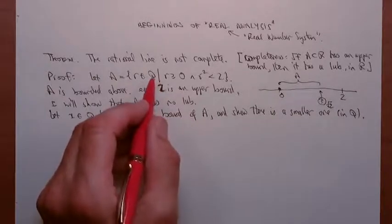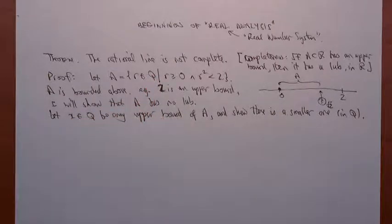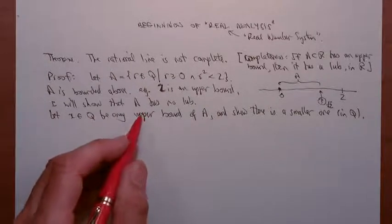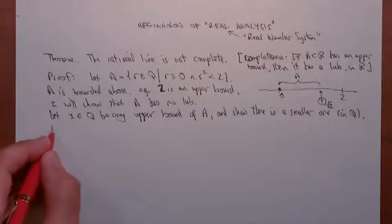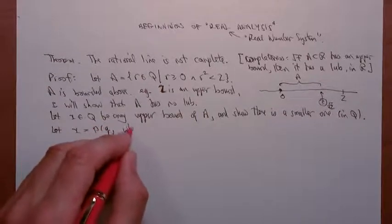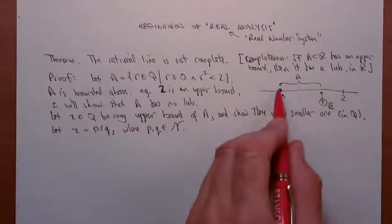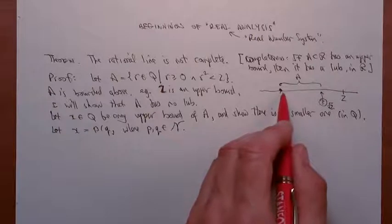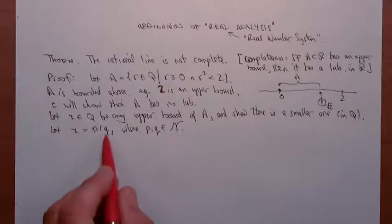How would I show there's no least upper bound? Let x in Q be any upper bound of A and show there's a smaller one — a smaller one in the rationals. We use the letter Q to denote rationals because Q stands for quotient, and rational numbers are quotients of integers. We can't use R for rational because R is used for real numbers. Since we're talking about the rationals, that upper bound x is going to be of the form p over q, where p and q are integers — in fact natural numbers, since the set A is non-negative.